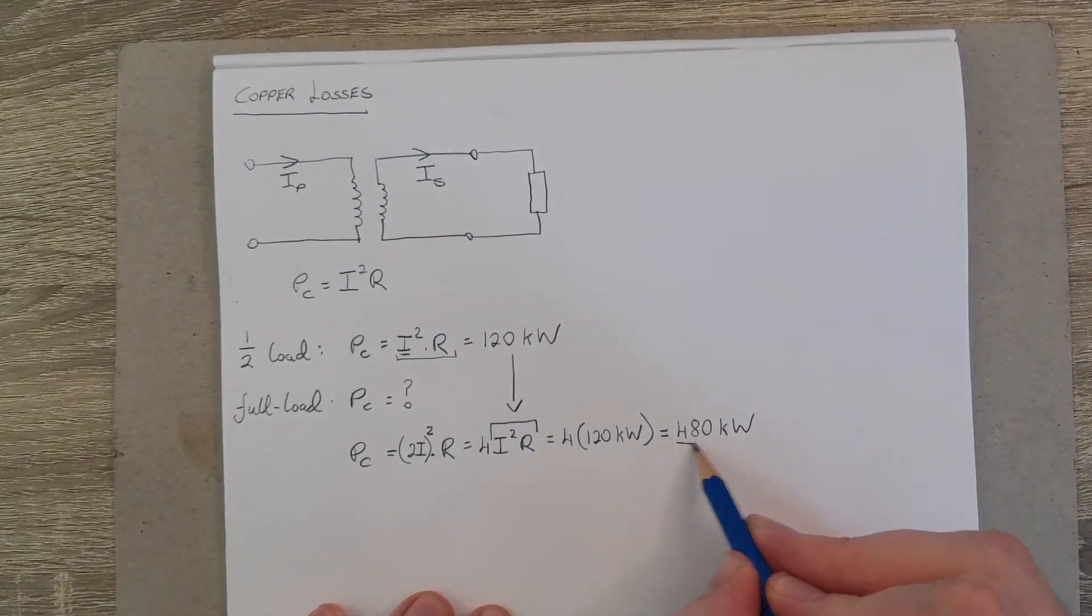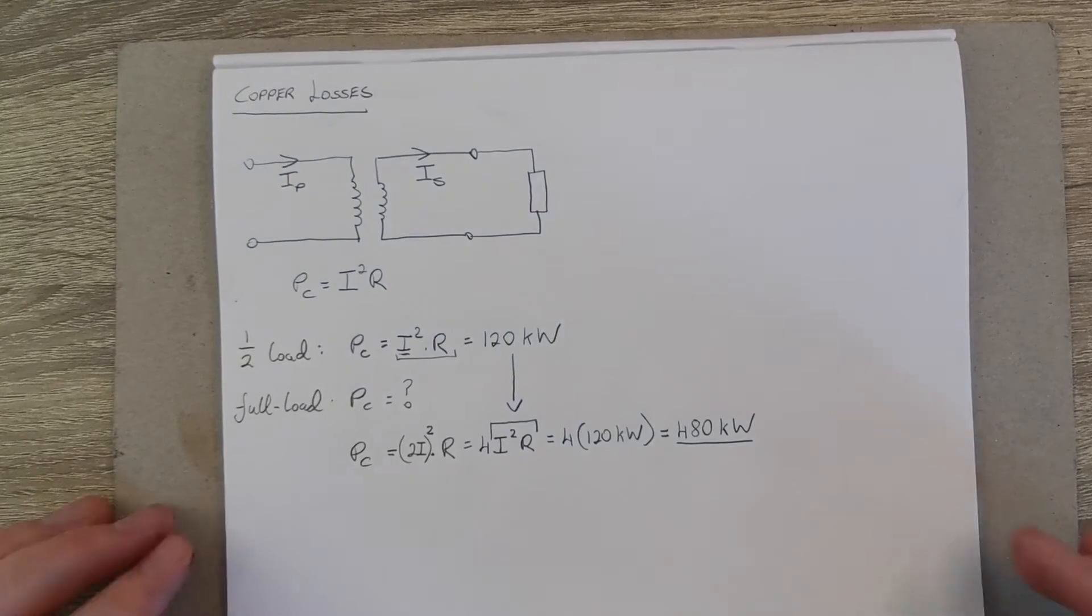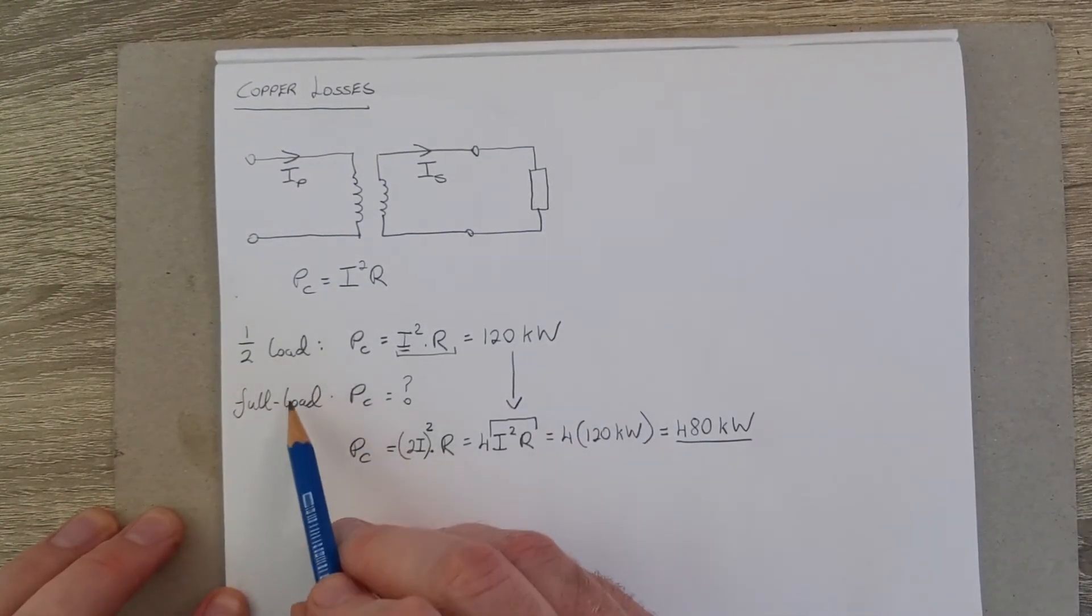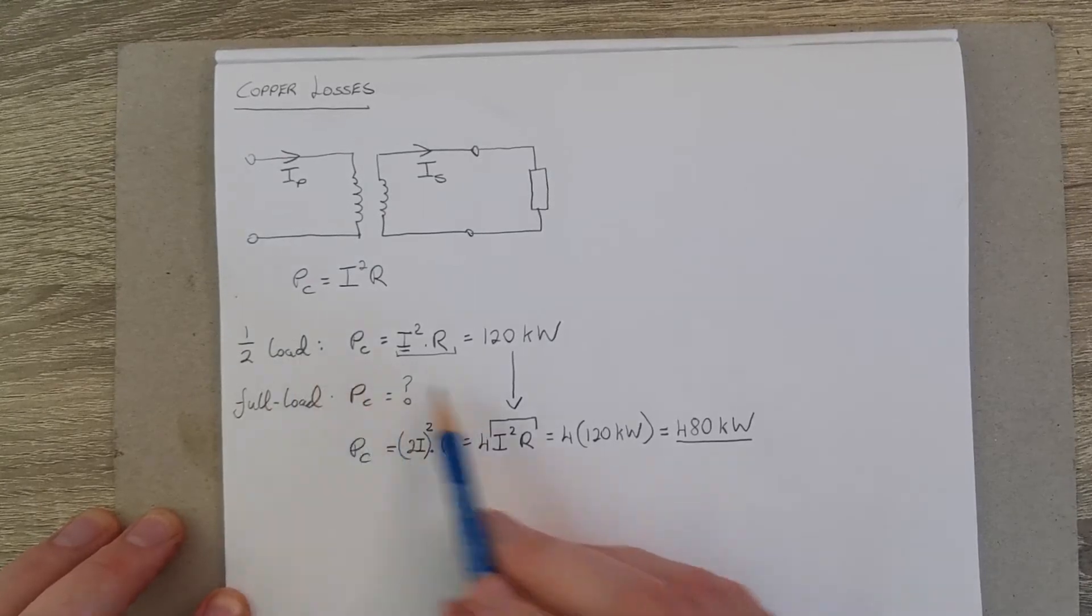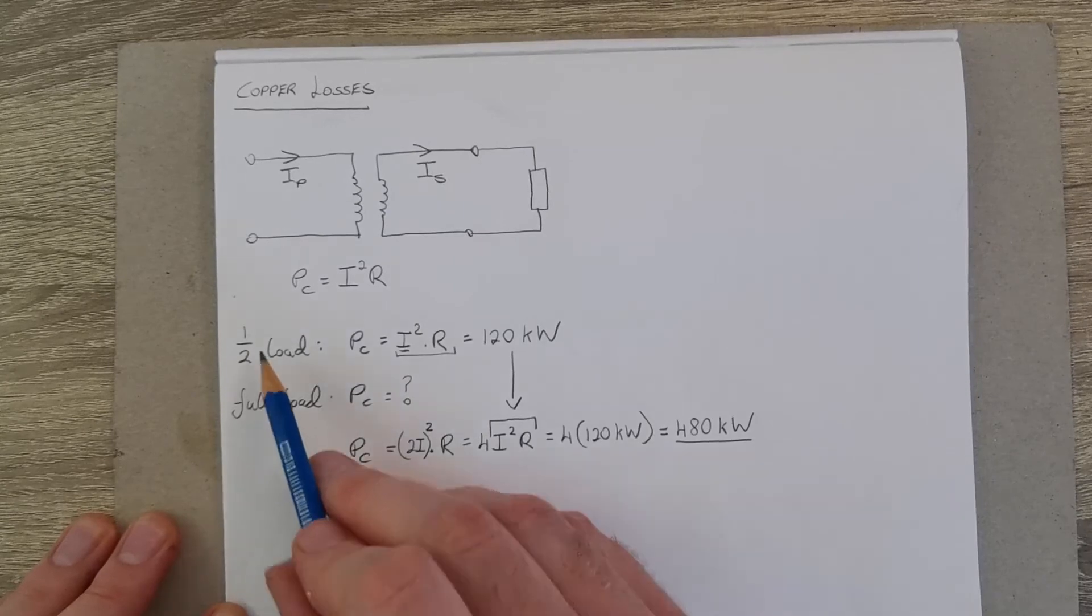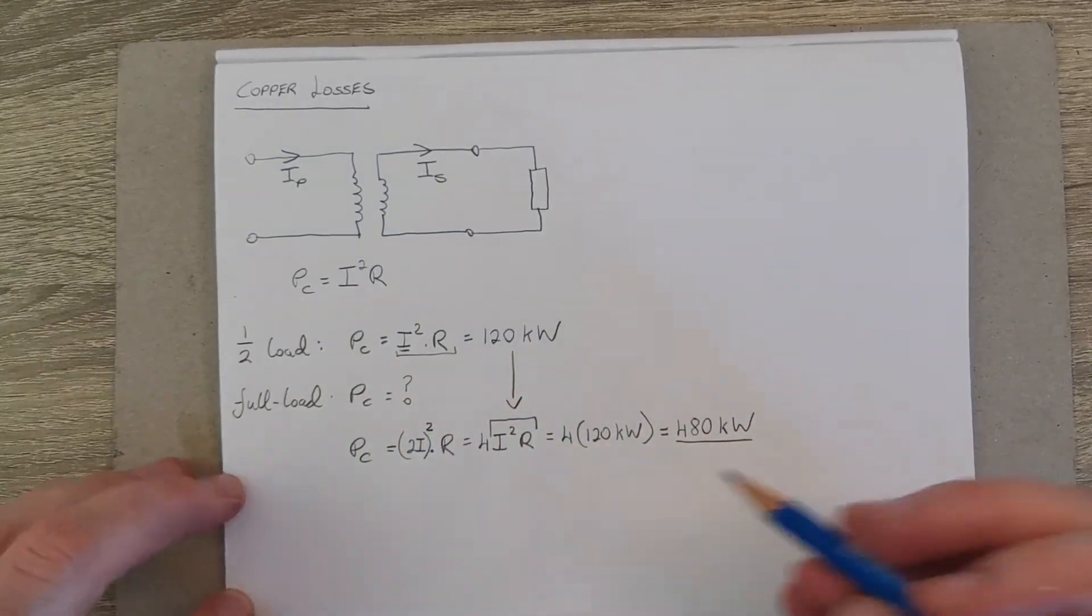So those are our copper losses at full load for this scenario. But if you break it down like this each time, even if you wanted to work backwards, you'd be able to apply this for any ratio: full load to half load, half load to quarter load, full load to a third load, whatever ratio.